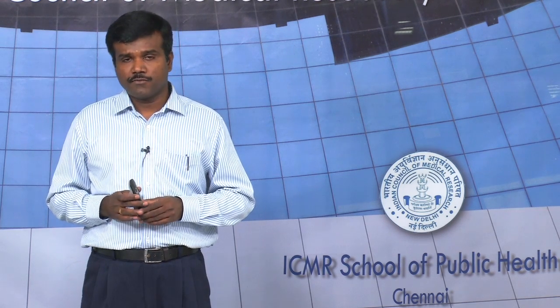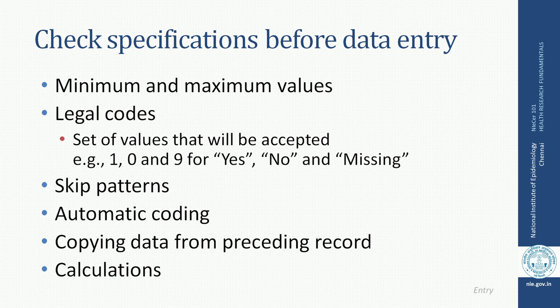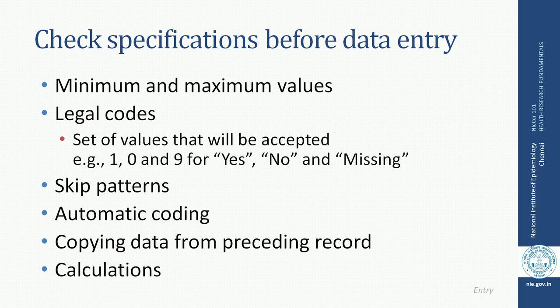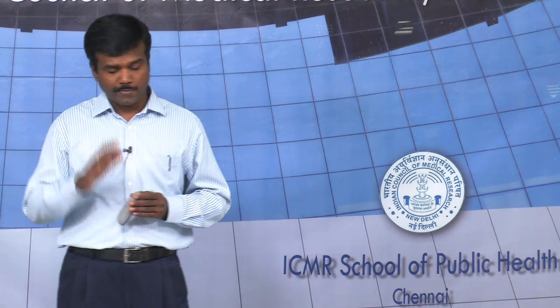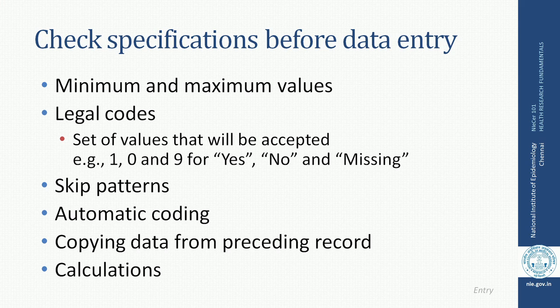You may specify skip patterns. For example, if you ask a question 'do you exercise?' and that person says no, then you can skip a lot of questions about type of exercise, frequency, nature, and intensity. Skip patterns are very useful even at the time of data entry. Automatic coding means when you enter a code, it automatically denotes something referenced in the data collection instrument and can be analyzed immediately. There may also be a need for copying data from the preceding record — for example, lab results carried forward to another section. Finally, some calculations: you may collect height and weight data, but rather than calculating BMI yourself, you can ask the database to do it — when you enter height and weight, it automatically calculates BMI. These specifications are necessary before data entry is made.